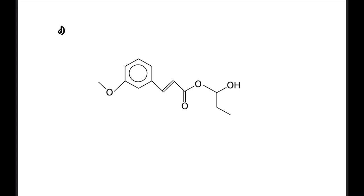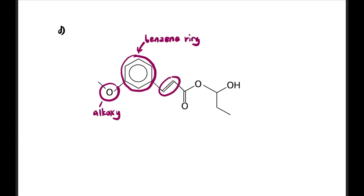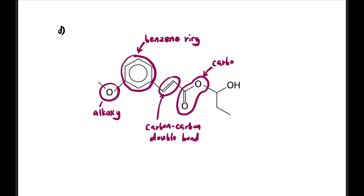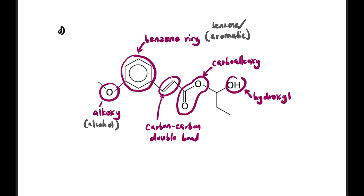Next, for a skeletal structure: there is a C–O–C (single bonds) — that is alkoxy, which corresponds to ether. There is a benzene ring — aromatic. A C=C double bond — carbon-carbon double bond, alkene. A C(=O)–O–C pattern — carboalkoxy, ester. And an –OH at the end — hydroxyl, alcohol. So homolog series identified: aromatic (benzene ring), ether (alkoxy), alkene (carbon-carbon double bond), ester (carboalkoxy), and alcohol (hydroxyl).